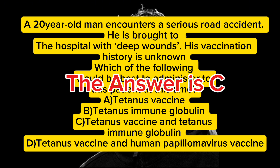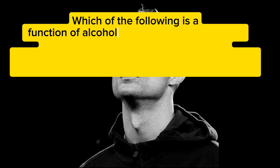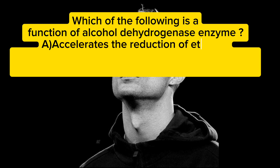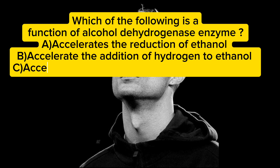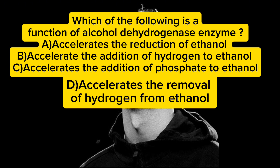Which of the following is a function of the alcohol dehydrogenase enzyme? A) accelerates the reduction of ethanol, B) accelerates the addition of hydrogen to ethanol, C) accelerates the addition of phosphate to ethanol, D) accelerates the removal of hydrogen from ethanol. The answer is D.